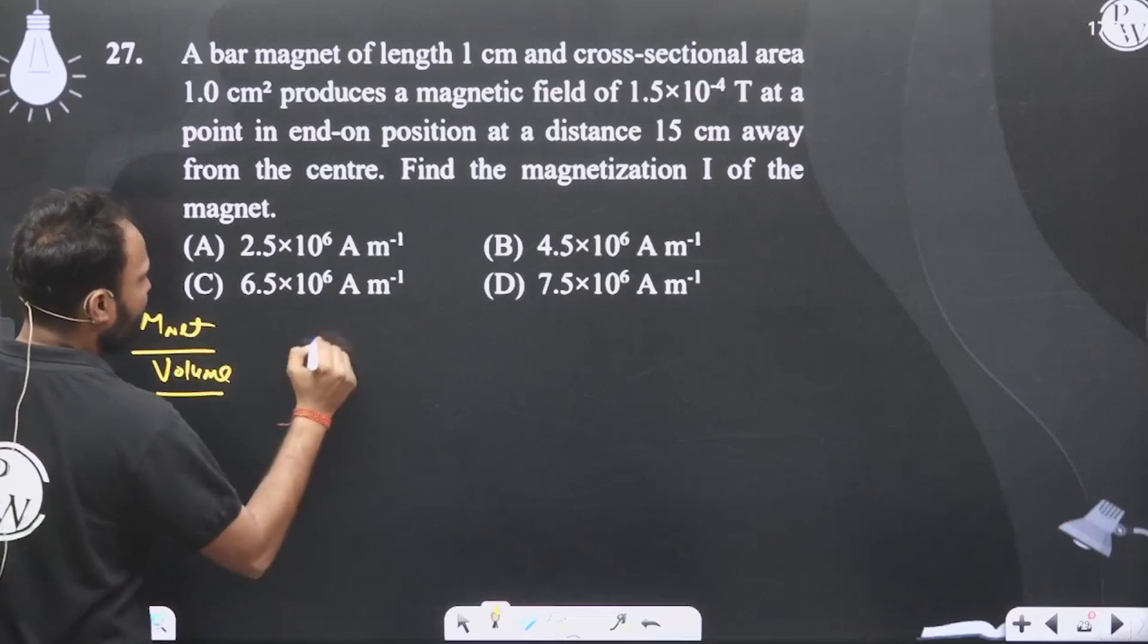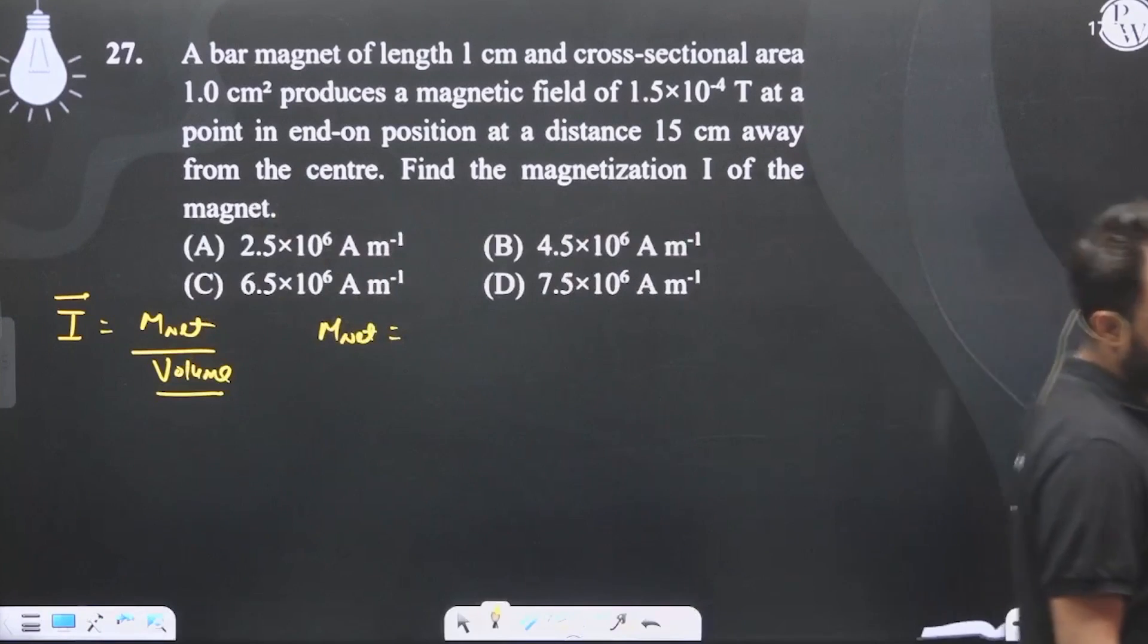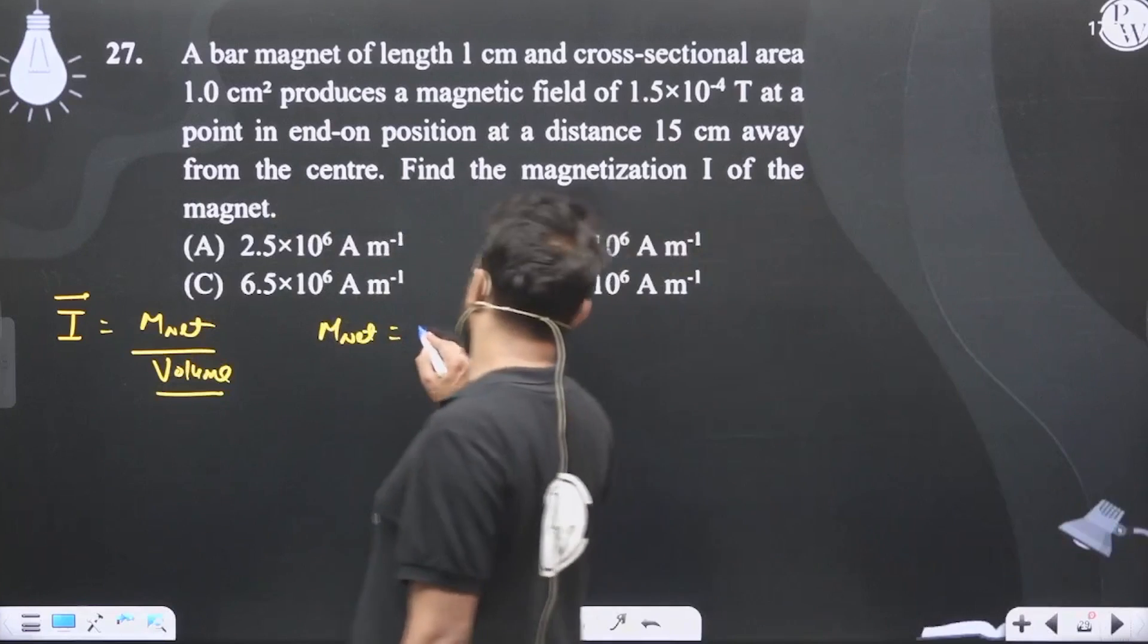For a similar question we found out the net magnetic moment. That net magnetic moment was nothing but 2.5.